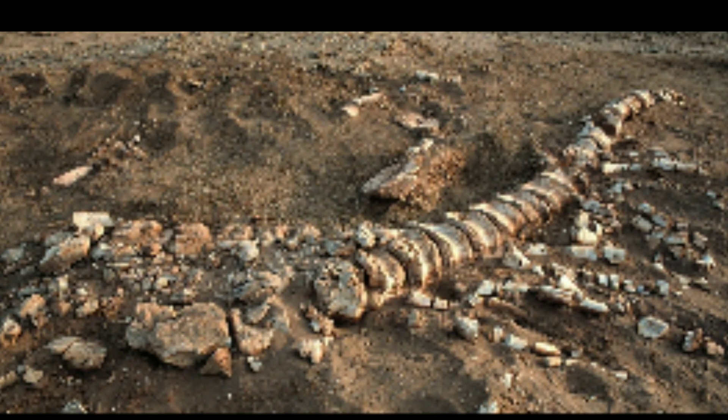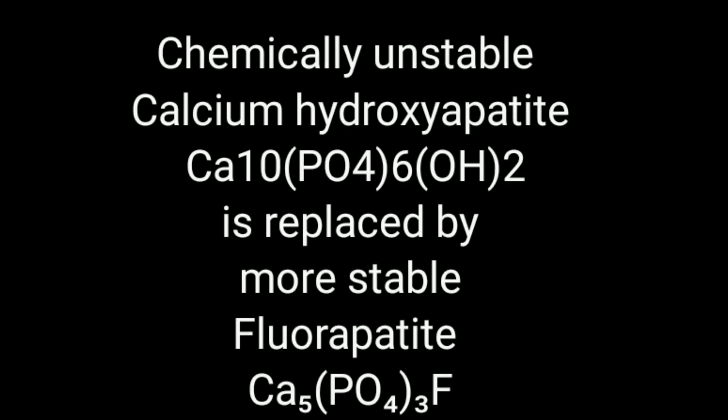Fluorine dating is a method that measures the amount of fluoride absorbed by bones in order to determine their relative age. Fluorine dating relies on the discovery that bone mineral calcium hydroxyapatite will absorb fluoride ions if, during burial, it is exposed to groundwater that contains fluoride.